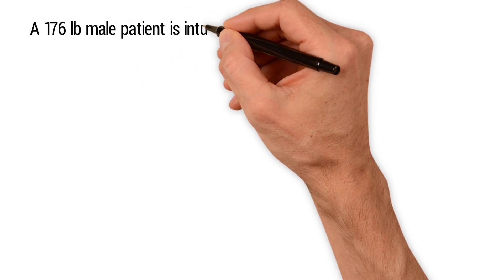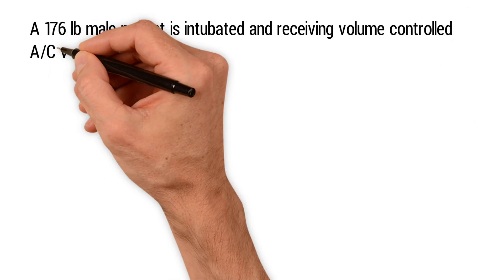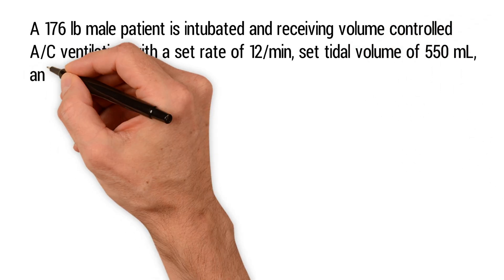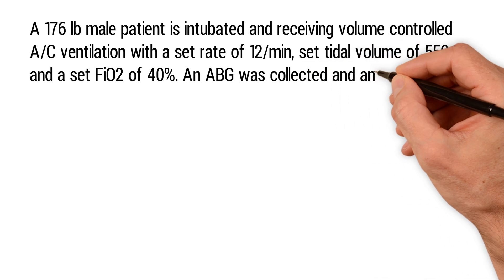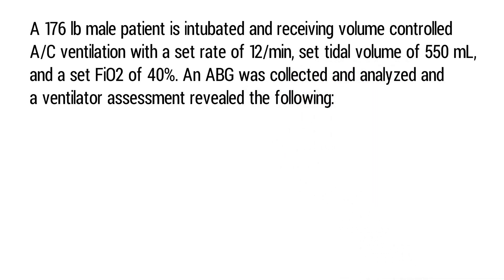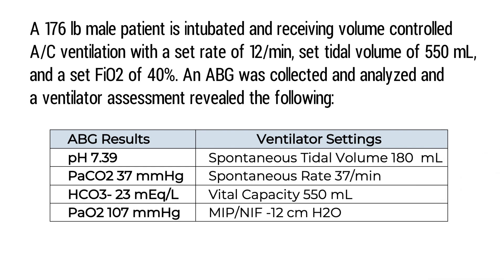A 176 pound male patient is intubated and receiving volume controlled assist controlled ventilation with a set rate of 12, a set tidal volume of 550 milliliters, and a set FiO2 of 40%. An ABG was collected and a ventilator assessment revealed: pH of 7.39, PaCO2 of 37, bicarb of 23, PaO2 of 107, a spontaneous tidal volume of 180 milliliters, a spontaneous rate of 37 breaths per minute, a vital capacity of 550 milliliters, and a maximum inspiratory pressure of negative 12.